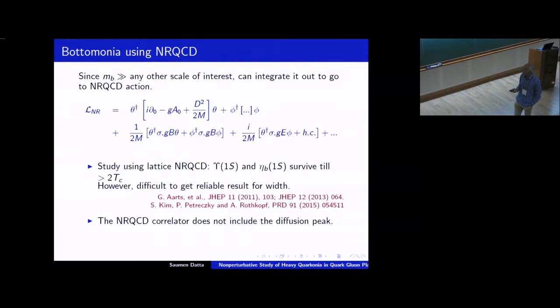Bottomonia, of course, you expect NRQCD will be very useful for bottomonia because the mass of the bottom is much, much heavier than any other scale of interest. So one can instead of using this relativistic action, use NRQCD actions. I have just written here the NRQCD action in the standard form that you're all familiar with, up to order one over M terms. So these thetas are the operators for creation and annihilation of quark. Phi is for anti-quark. And then there are these interaction terms, these magnetic interaction terms and the electric interaction terms.